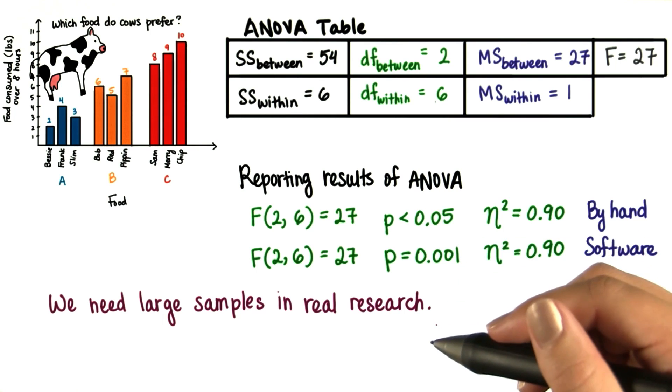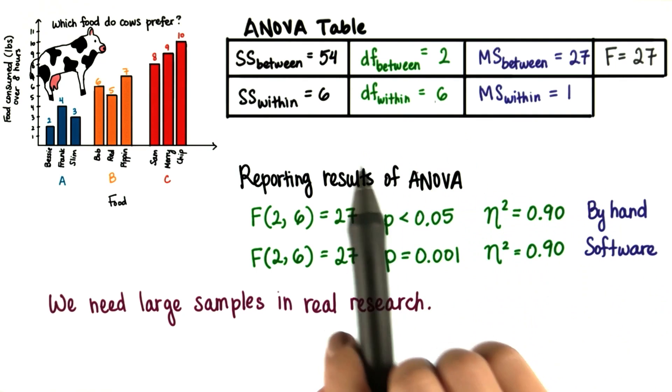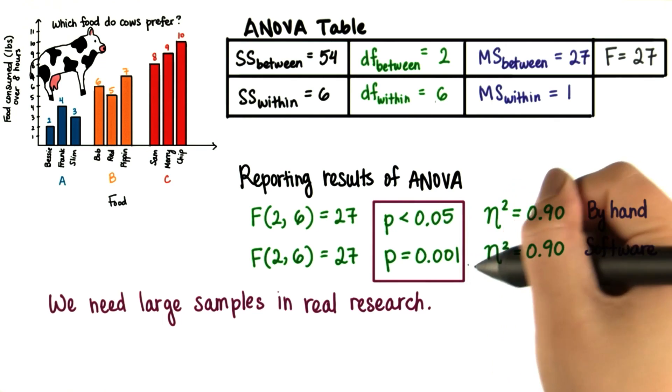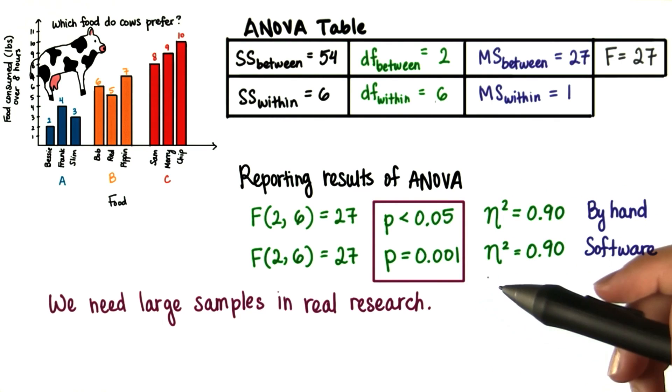We would use software instead. When we use software, we don't care as much about the intermediate steps. Really, we just want to compare the p value with alpha. We know that if p is less than alpha, we'll reject the null.